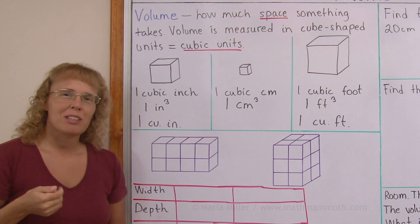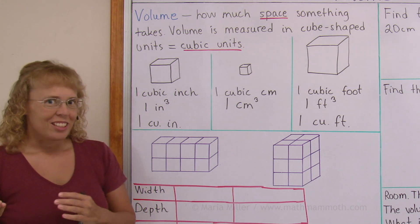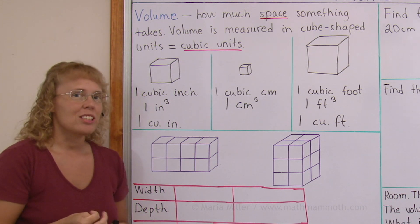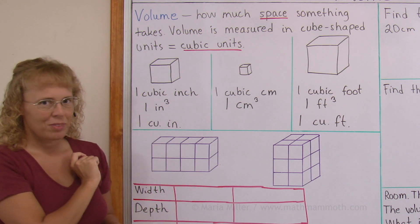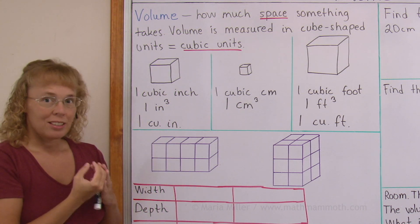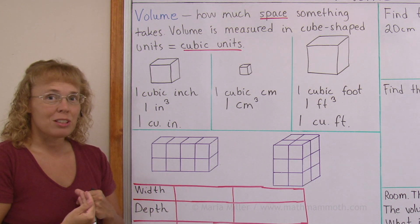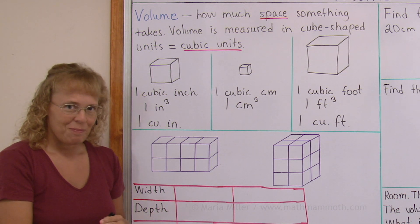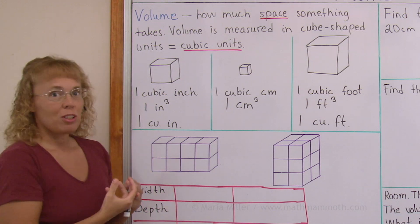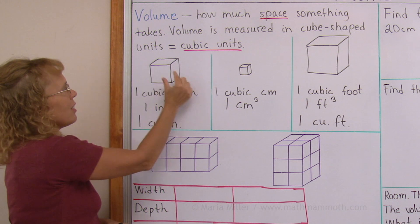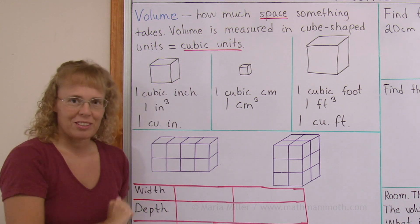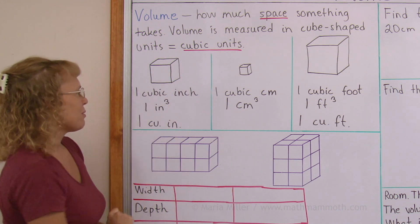Again, this elevated three probably reminds you of area units where we had square inches and square centimeters, and we had an elevated two. When we're measuring area, we have two dimensions to deal with, the width and the length. But with volume we have three dimensions. We have the width here, and then height, and then this way the depth. So that's where this three comes from.